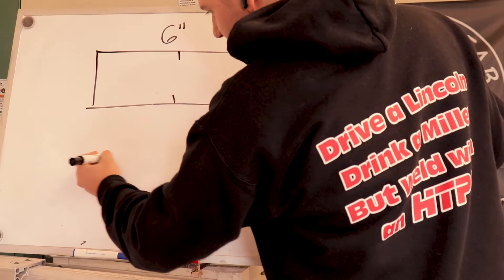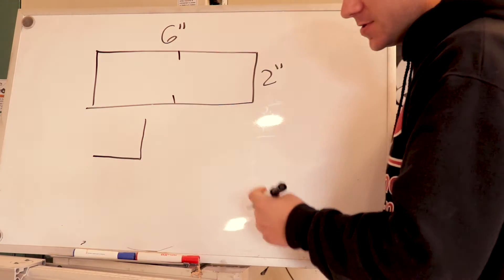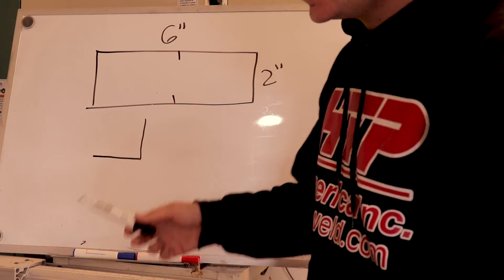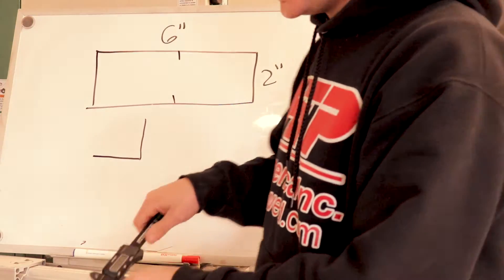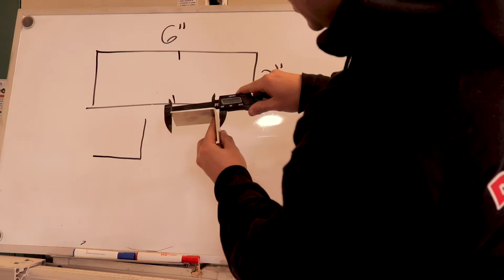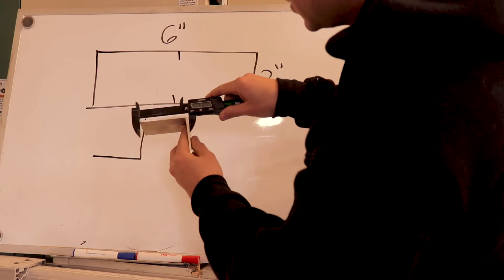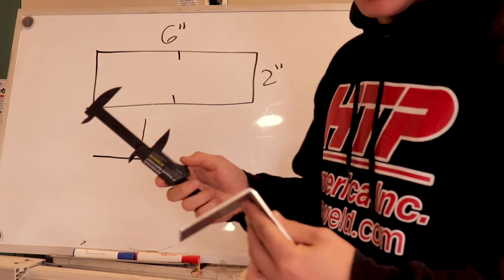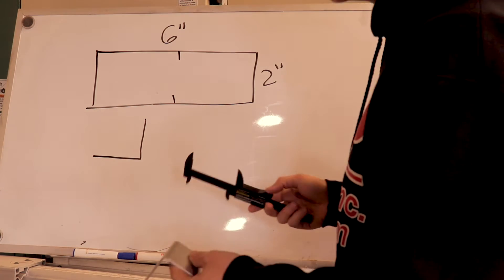Then you're going to bend it on that center line at a 90 and you want to get it as perfect as you can. Make sure it's not less than a 90 because that's going to give you problems. Just make sure it's as 90 as you can get, a hair over would be better than less.